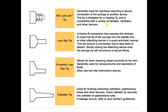The slip tip syringe is very common. The user pushes the needle hub onto the syringe and friction holds the needle hub in place on the syringe tip — there is no locking function like that found on the luer lock. The eccentric tip is used when you need to administer medication parallel to the skin, such as injecting into a surface vein without the needle penetrating too deeply.